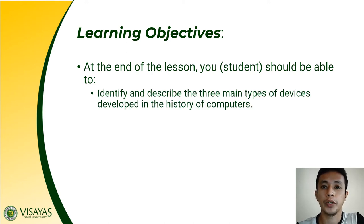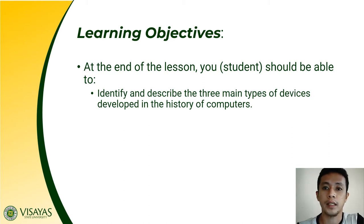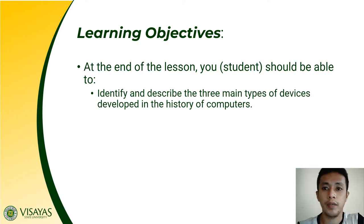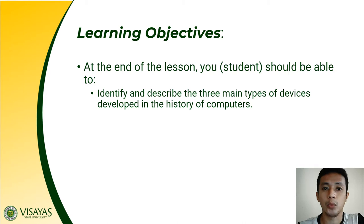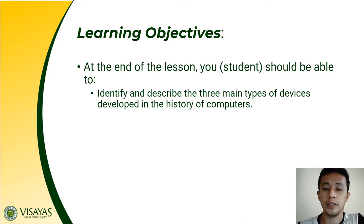First, you should be able to identify and describe the three main types of devices developed in the history of computers. There are actually different types of devices developed in the history of computers, and each of these will be classified into three major types: whether it could be manual mechanical, electromechanical, or it could be an electronic device.